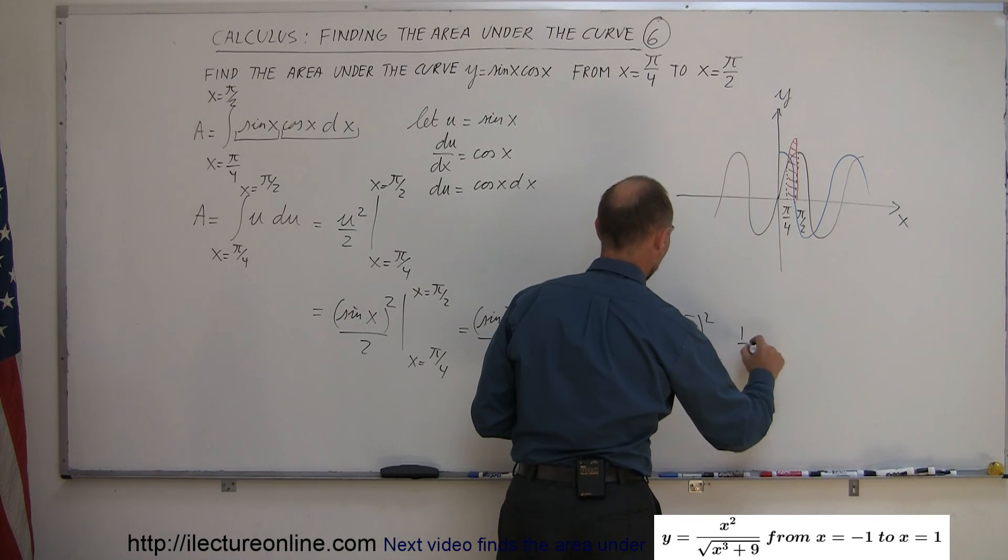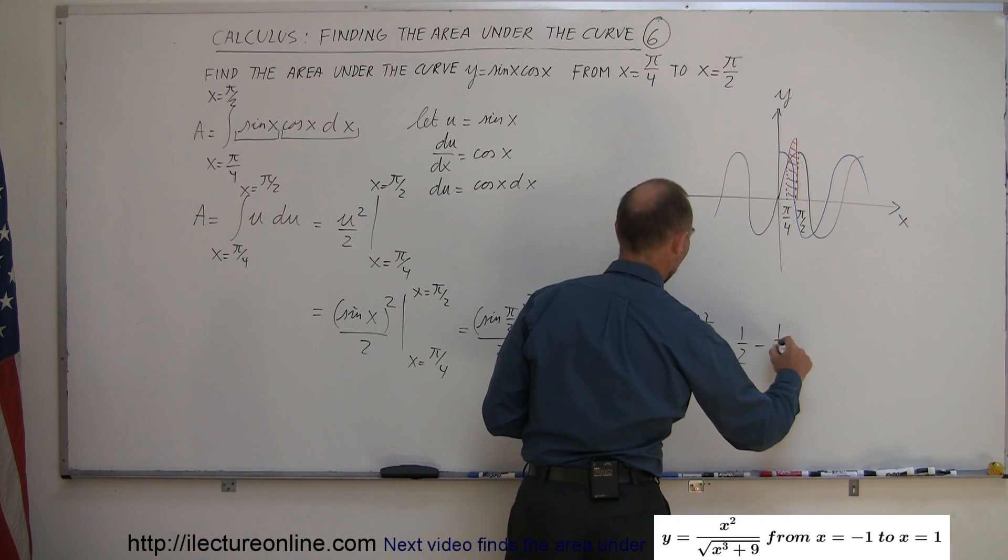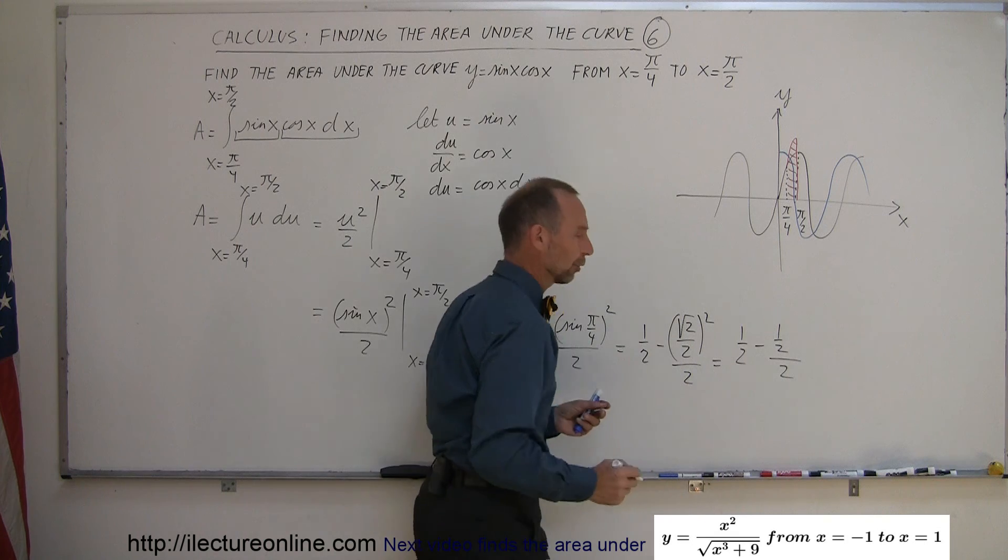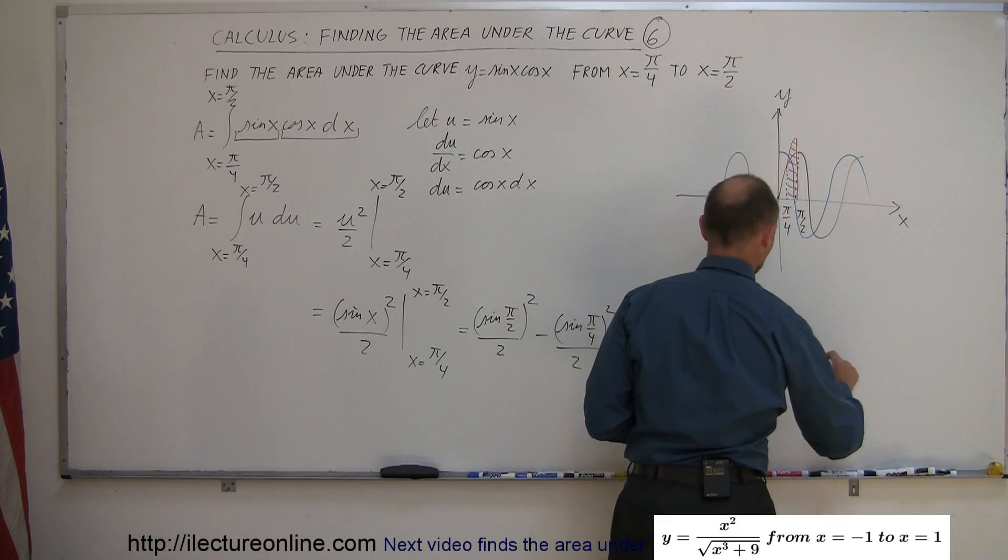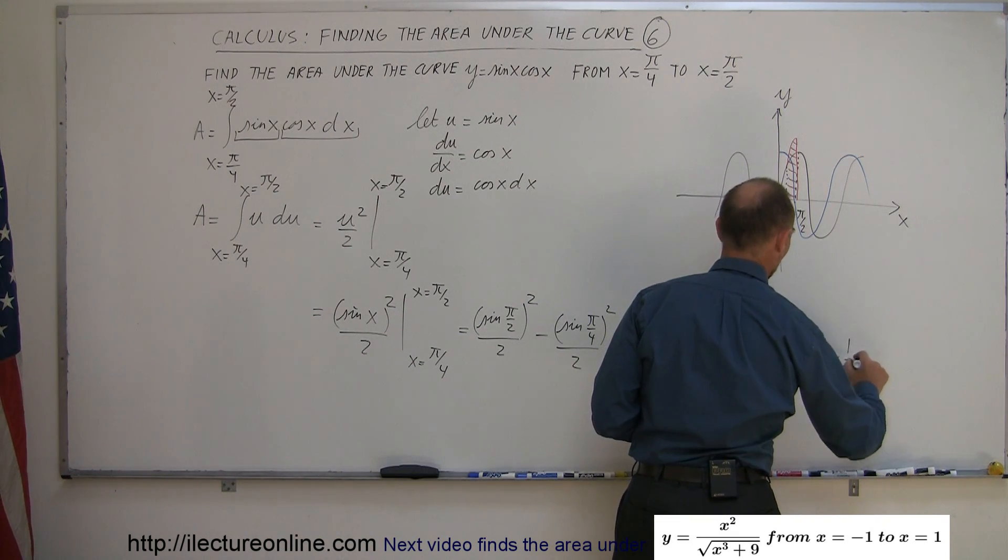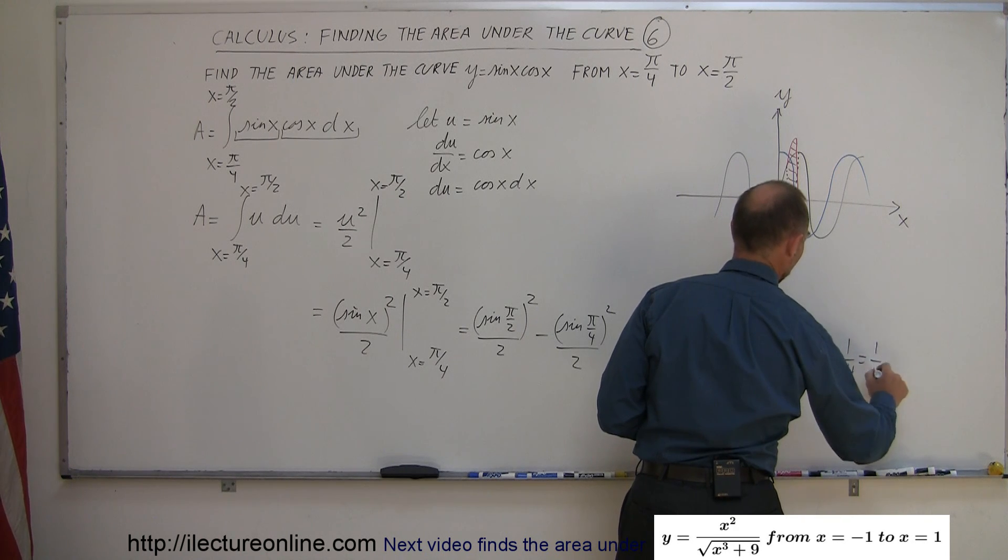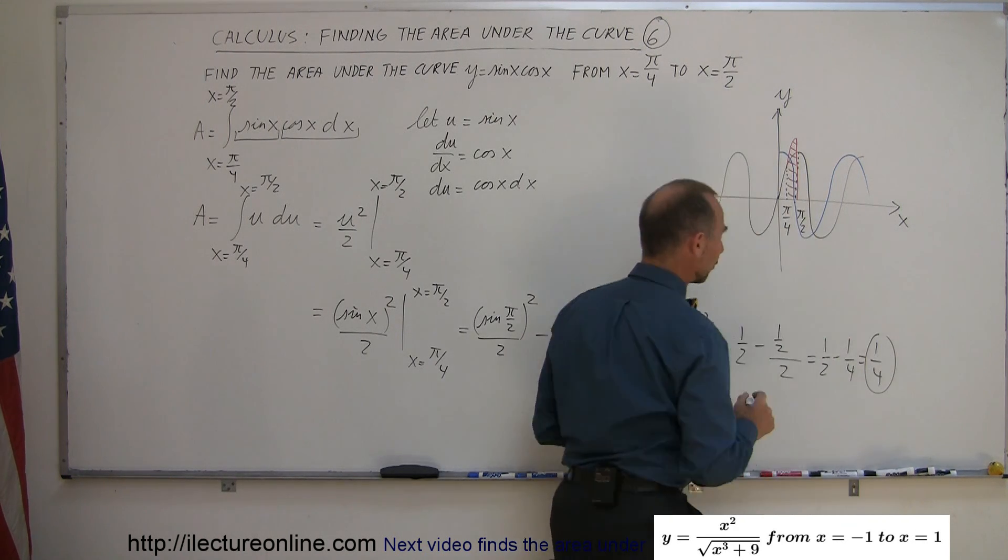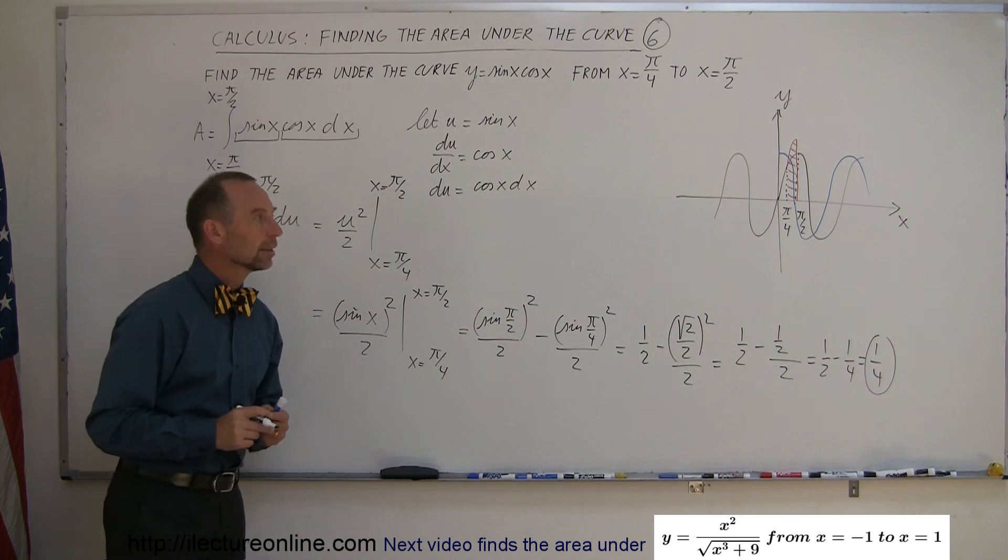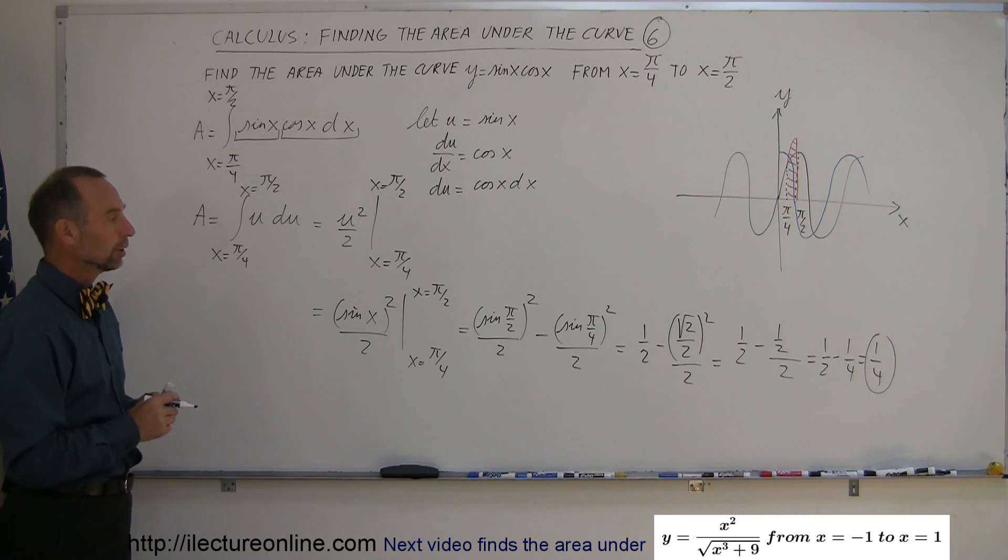And, of course, 1 half divided by 2 is 1 quarter. So, this is equal to 1 half minus 1 quarter, and therefore, that is equal to 1 quarter. So, the area of that integral is 1 quarter, and that's how you do a problem like that.